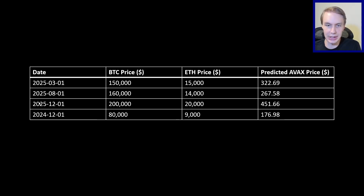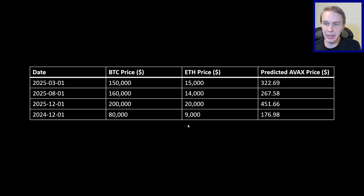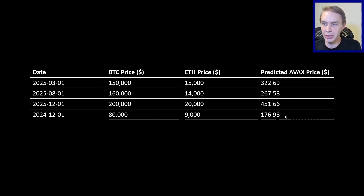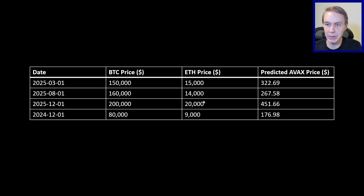You can imagine other scenarios: a little bit further out in time with Bitcoin a bit higher and ETH a bit lower gives $267; late 2025 with even more bullish prices for Bitcoin and ETH gives an even higher expected price of AVAX; and there's also a more bearish scenario. But this is not entirely satisfying because I'm just randomly picking numbers, and with three different inputs there are tons of combinations you could check — how do you know which one is more realistic than another?